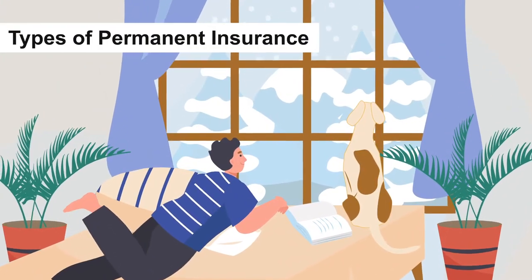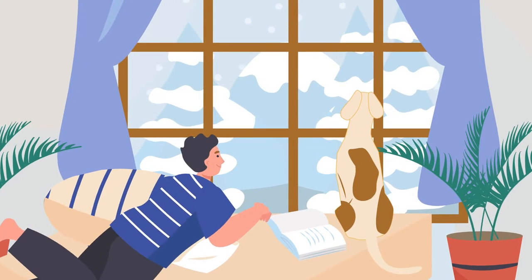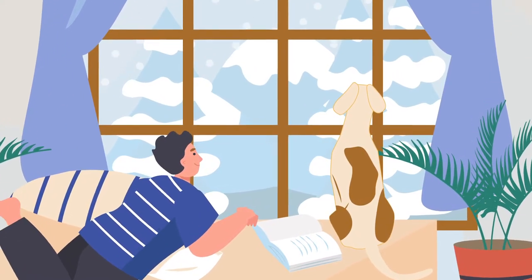Now let's look at the types of permanent life insurance. You can choose between whole life, universal life, indexed life, and variable universal life insurance.